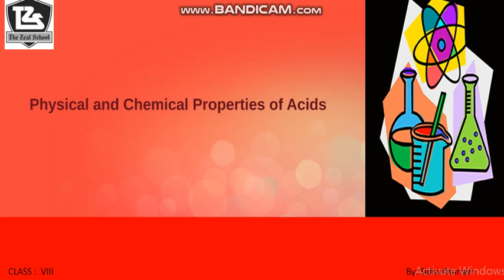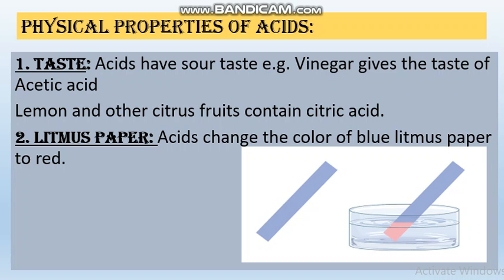First, we discuss the physical properties of acids. Taste: acids have a sour taste. For example, vinegar gives the taste of acetic acid, and lemon and other citrus fruits contain citric acid. Litmus paper: acids change the color of blue litmus paper to red. When we put blue litmus paper in acid, it changes to red color.